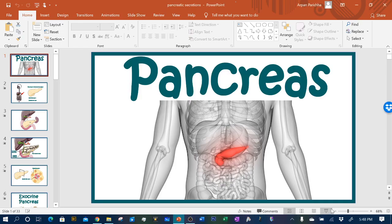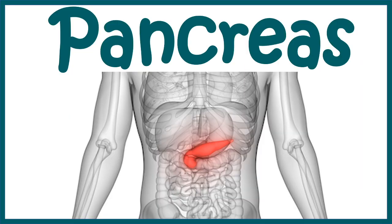Hello everyone. In this video we'll talk about the pancreas — this is an overview of pancreas anatomy and physiology. In subsequent videos we would go into the details, but in this video we would learn the very basics: the function of the pancreas, the endocrine and exocrine parts. So let's begin. The pancreas is situated just behind the liver.